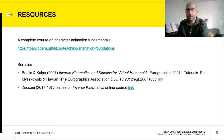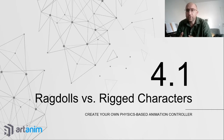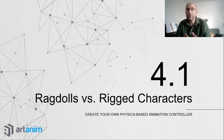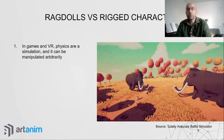A key distinction you must understand is the difference between rigged characters — generally animated with kinematic movements and kinematic controllers — and ragdolls, which are moved with physics: forces, masses, inertia, gravity, and collisions. When you use physics-based character animation, you are doing a physical simulation.